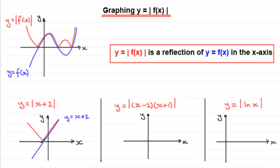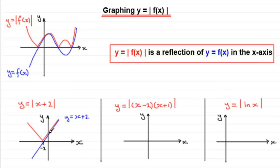Now let's mark where the graph crosses the axes. The blue graph y equals x + 2 crosses the x-axis when y equals 0, giving x + 2 = 0, so x = −2. That point is at −2. And it crosses the y-axis when x = 0, giving y = 2. So that point is at 2.